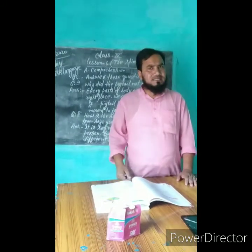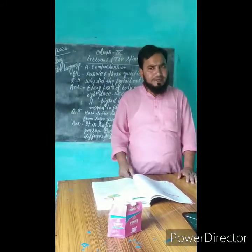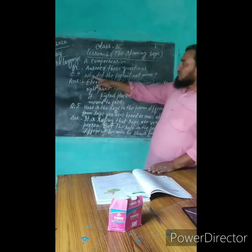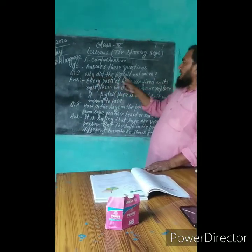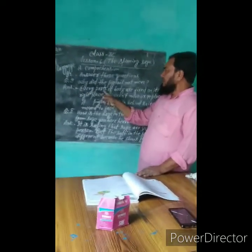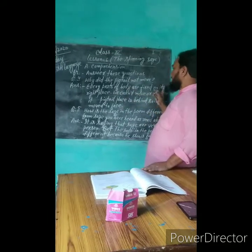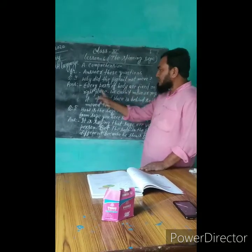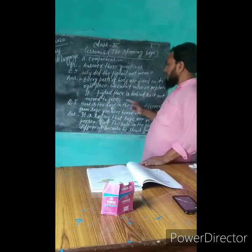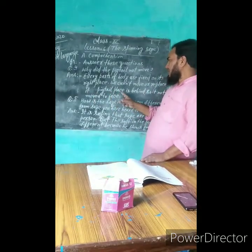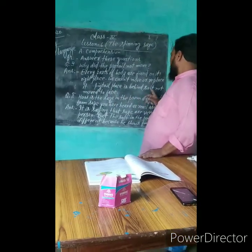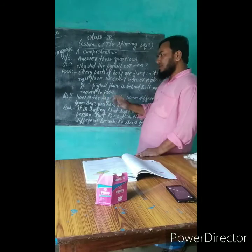Question number 4: Why did the pig's tail not move? The answer is: the body parts are fixed in their right place. We cannot move or replace it. The pig's tail place is behind, so it cannot move to face.